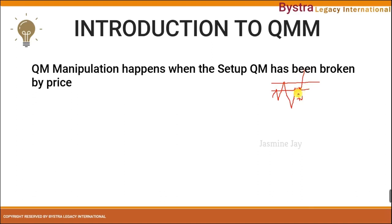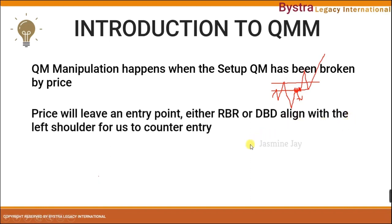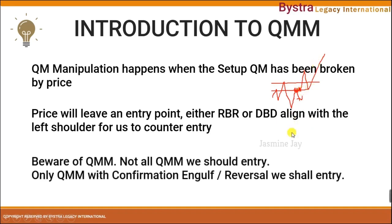Once the price has broken the QM structure and there is a base alongside the left shoulder, this will be a good chance for us to counter back on the continuation for a buy. Price will normally leave an entry point — either a rally base rally, or a drop base drop if you want to sell — aligned with the left shoulder for us to counter-entry when price comes back to this area and goes up. We have to be aware that not all QM manipulation setups should be entered; only those with confirmation of an engulf or reversal.